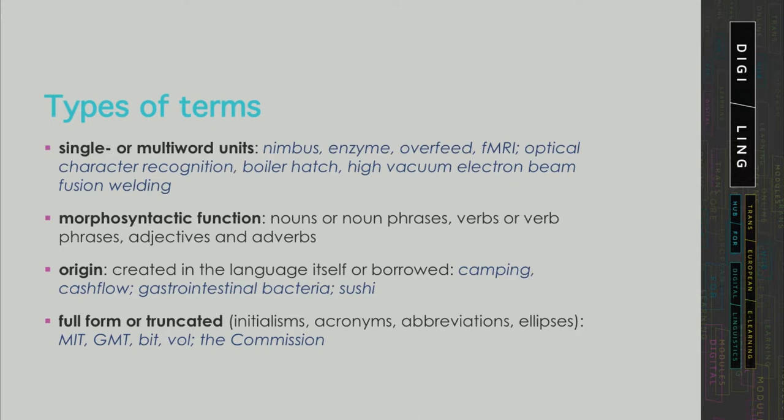Terms can also be verbs or verb phrases, adjectives or adverbs. Some domains do use terms from categories such as adverbs. Consider, for example, music, with its adverbial terms borrowed from Italian such as allegro, vivace, and crescendo, all referring to the mode of playing or interpreting a composition.